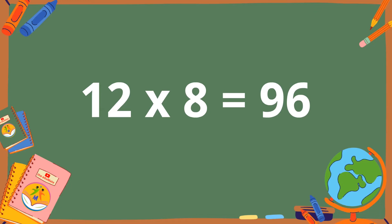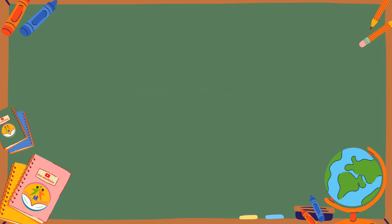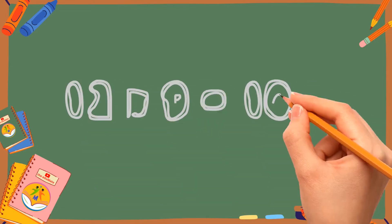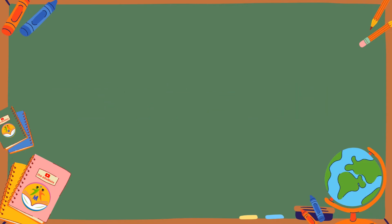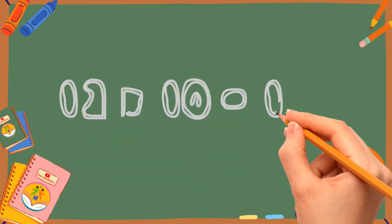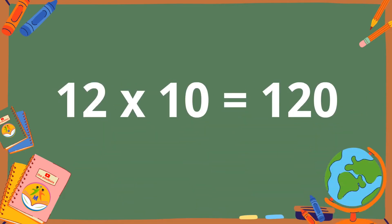12 eights are 96. 12 nines are 108. 12 tens are 120.